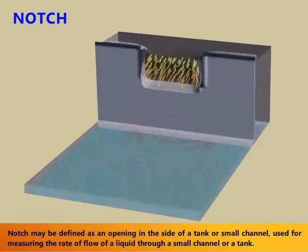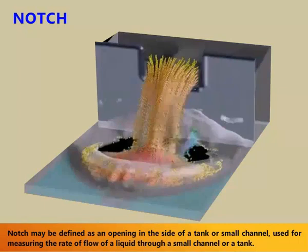Notch and weir. A notch may be defined as an opening in the side of a tank or small channel used for measuring the rate of flow of a liquid through a small channel or a tank.